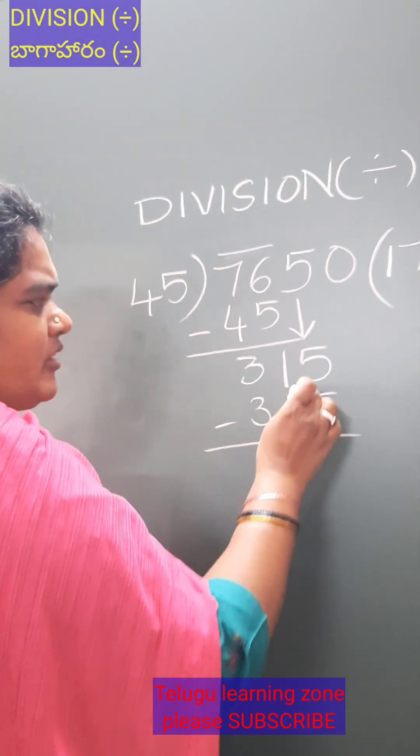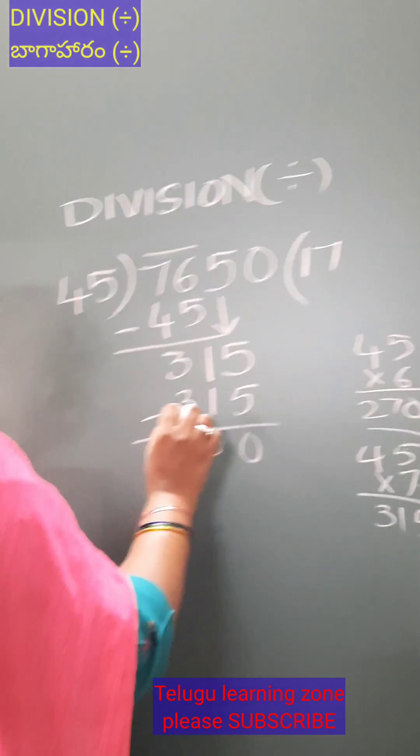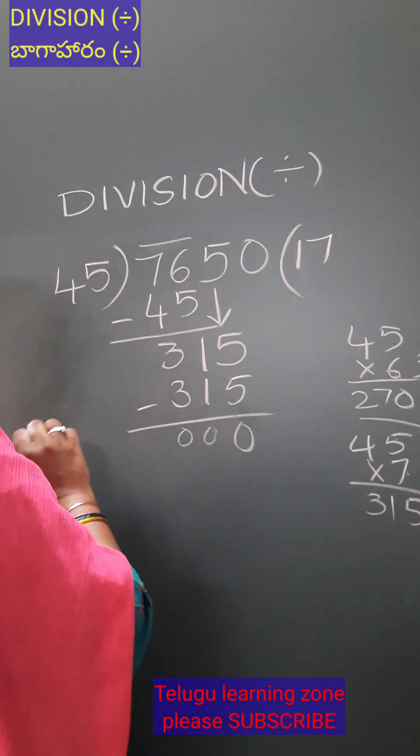Now subtract: 5 minus 5 is 0, 1 minus 1 is 0, 3 minus 3 is 0. Okay,